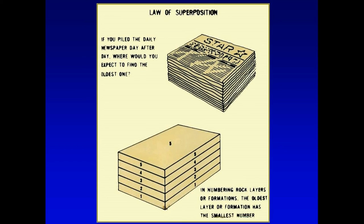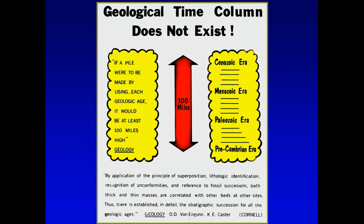So the question is: is that what we find? From Van Engen and Castor's geology textbook from Cornell, the idea is that if you had a pile using every geologic age, you'd have it about 100 miles deep. Geologists stated that — not me. And you don't find that anywhere on the face of the Earth. I don't believe there's any place where you can find the entire column represented from the oldest to the newest.